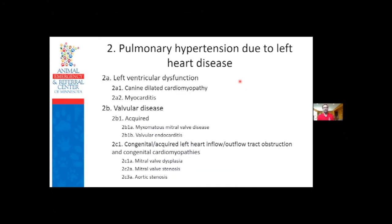Class 2 is pulmonary hypertension due to left heart disease. Dogs with severe left heart disease - whether dilated cardiomyopathy, degenerative valve disease, or congenital heart diseases - develop congestive left heart failure. As the left heart disease becomes more severe, blood backs up, the left atrium enlarges, and those pressures back up through the pulmonary veins into the lungs. There are no valves between the left atrium and pulmonary veins, so high left atrial pressures transmit all the way to the lungs, causing fluid to ooze into lung tissue - cardiogenic pulmonary edema.